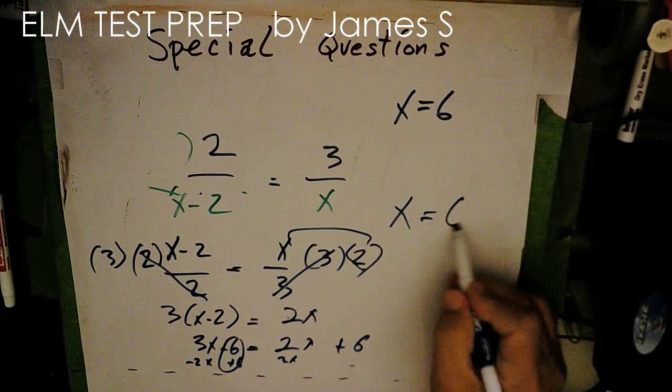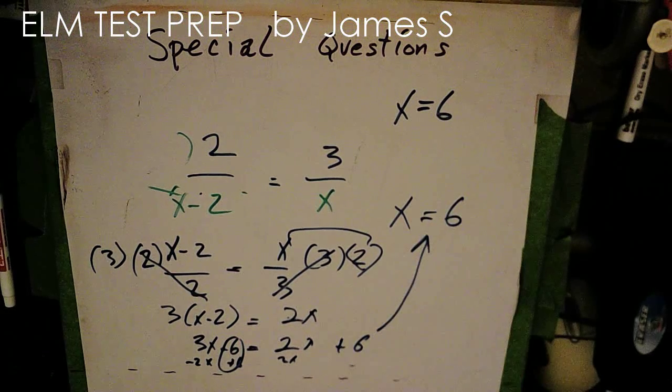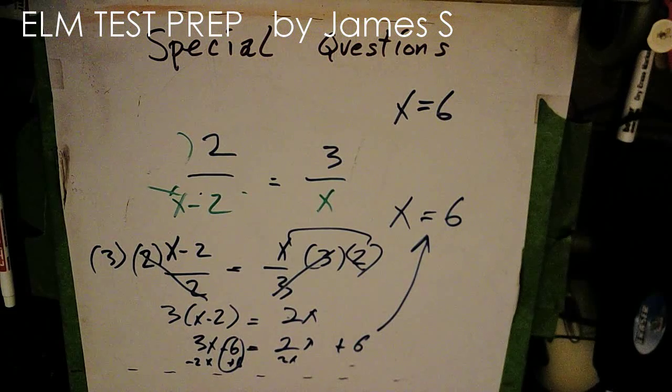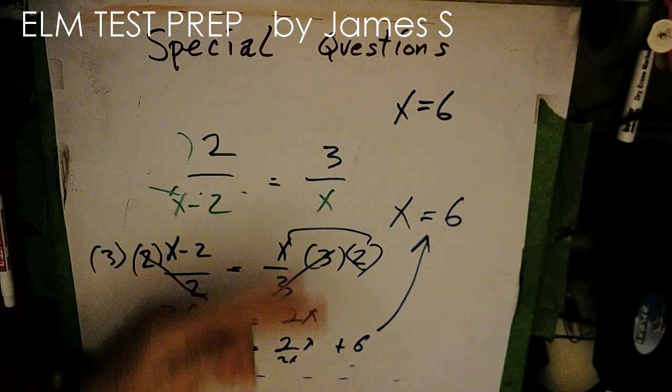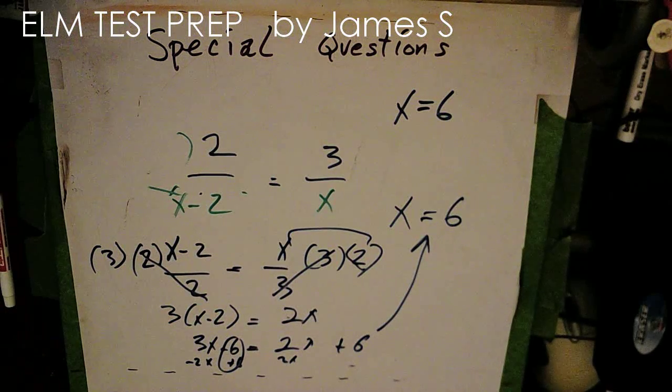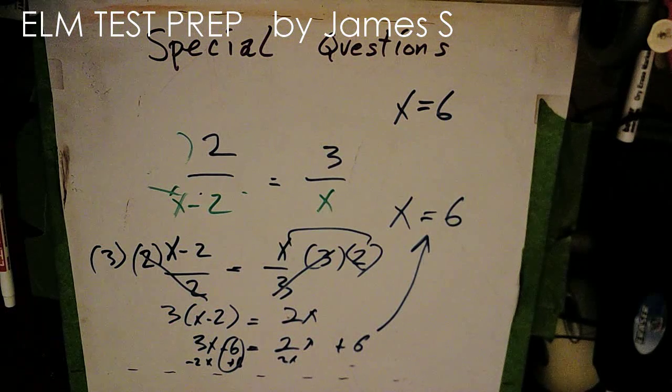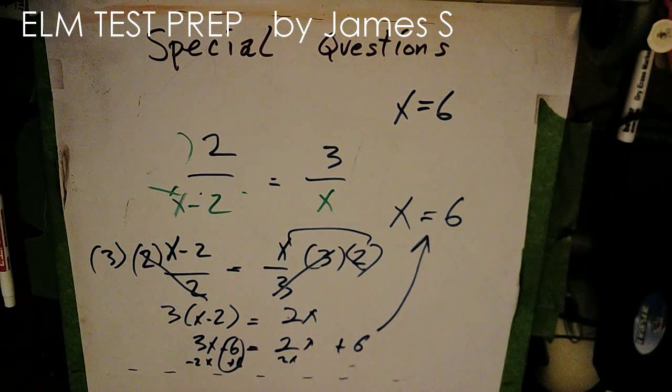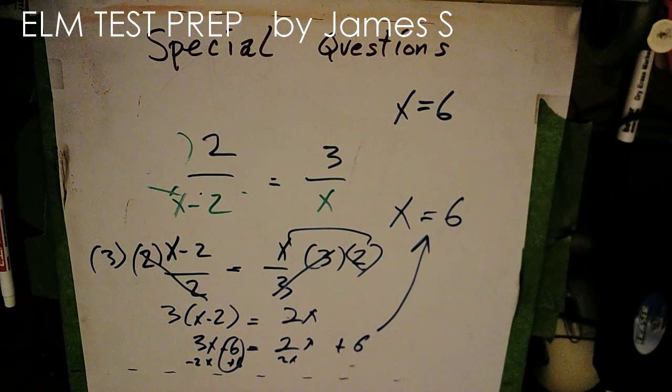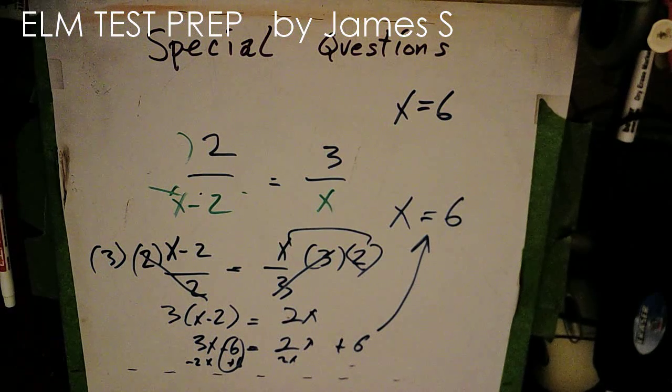So then I've got 3x take away 2x is just x. And it equals 6. And sure enough, I got the same answer. So the fact that I flipped this, it didn't look like I was doing anything legal. It looked kind of just hocus pocus magic and wave your arms and hope for the best. But it was a valid operation.